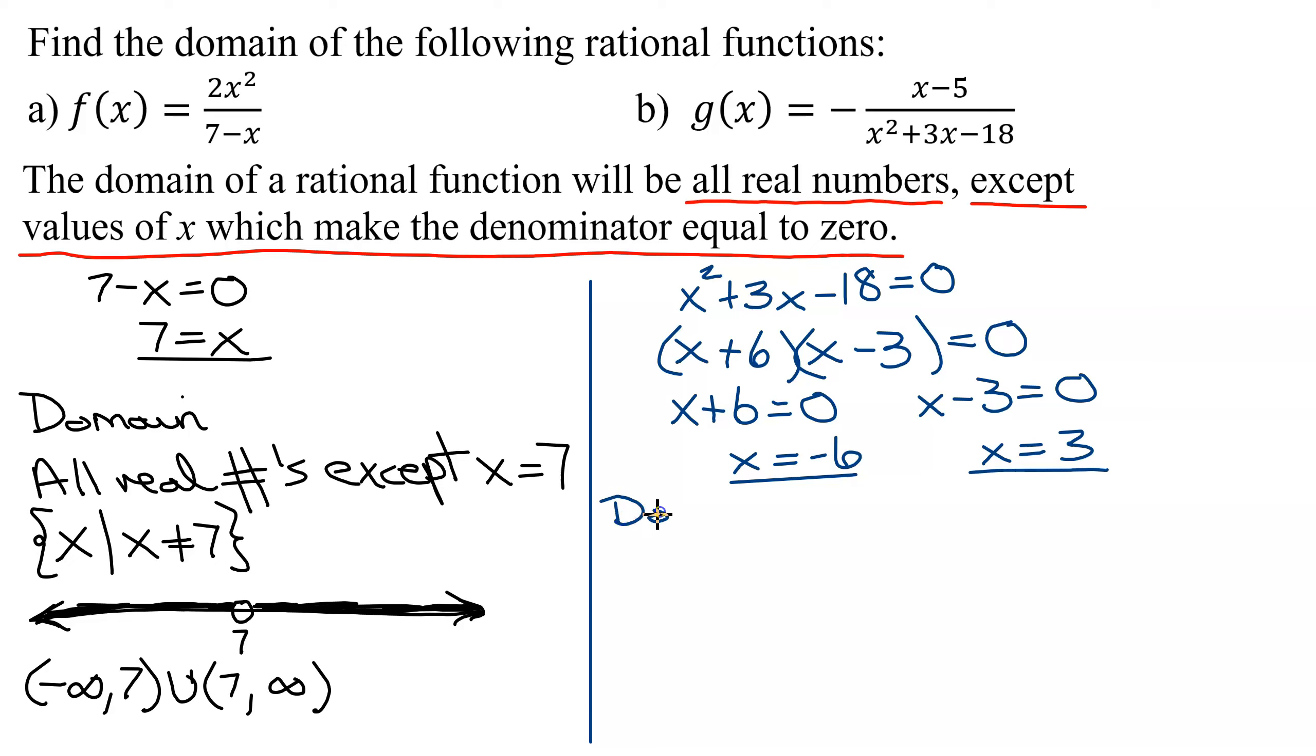What is my domain in this case? It's going to be all real numbers except x equals negative 6 and 3. Set builder notation, we could write it as x such that x does not equal negative 6 or positive 3.